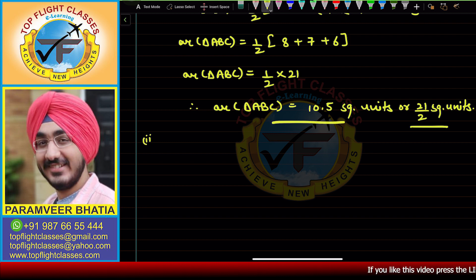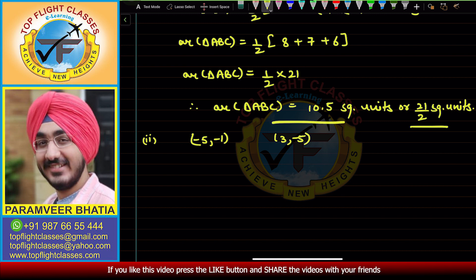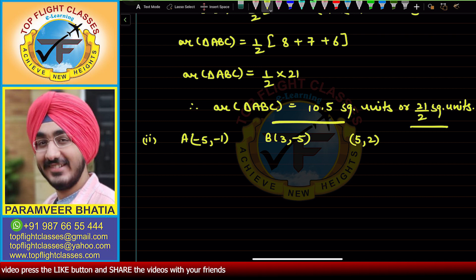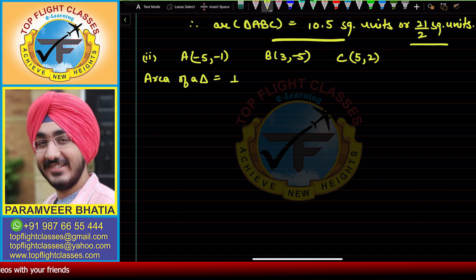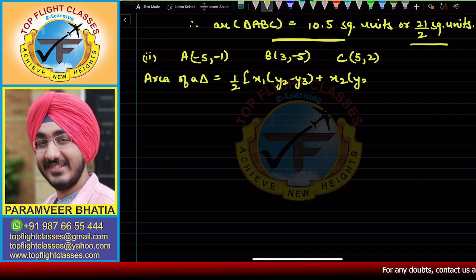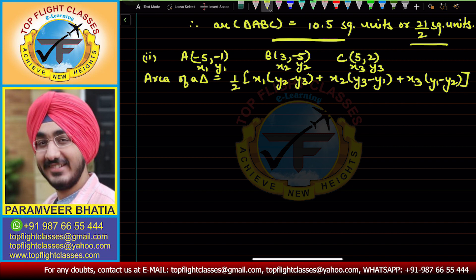Moving to part two: the vertices are (−5, −1), (3, −5), and (5, 2). Let the first coordinate be A, second be B, and third be C. Using the same area of triangle formula with x1 = −5, y1 = −1; x2 = 3, y2 = −5; x3 = 5, y3 = 2.